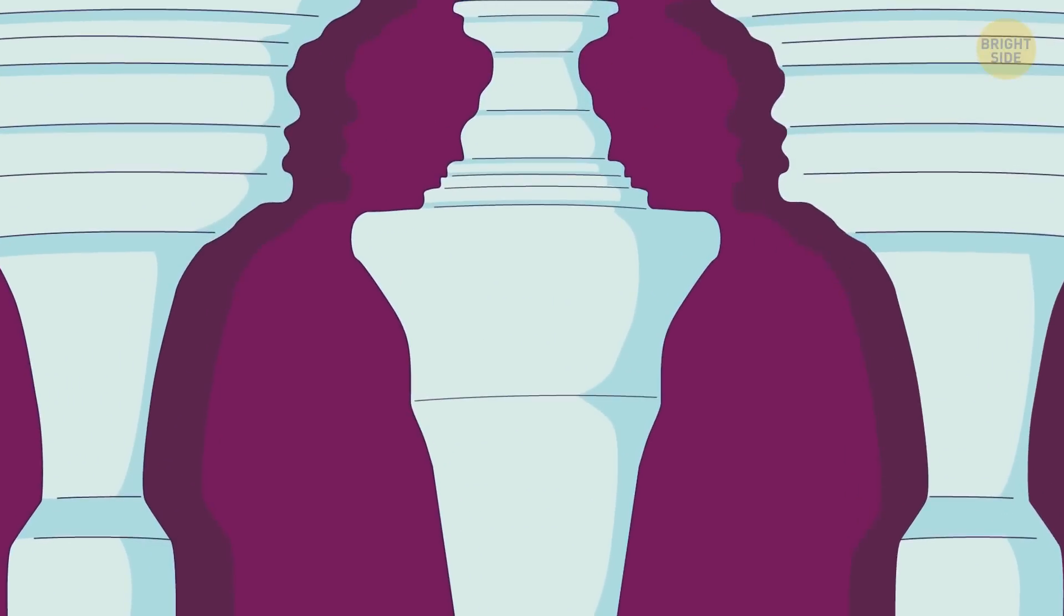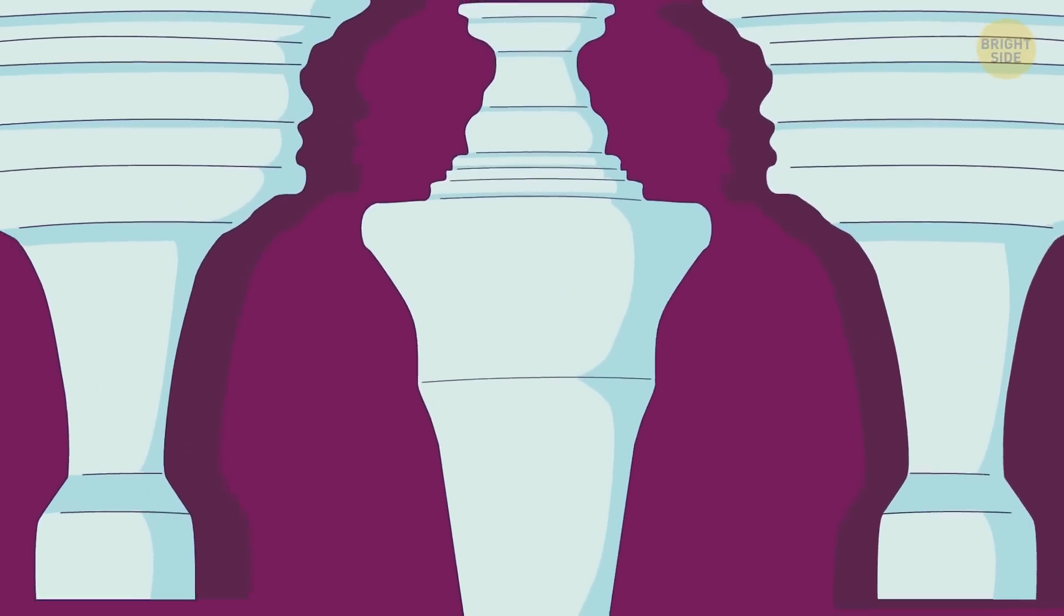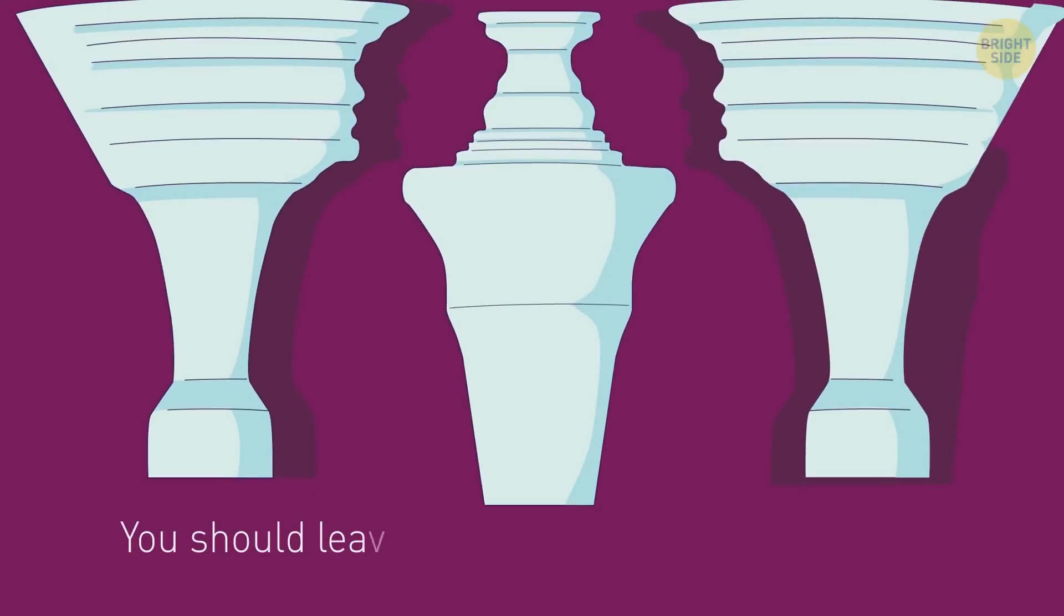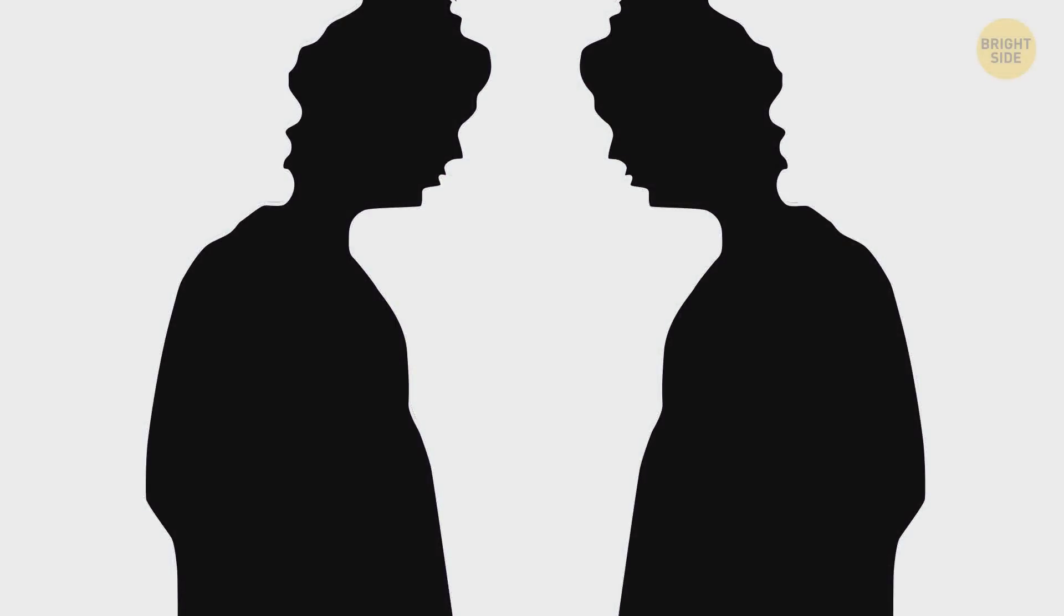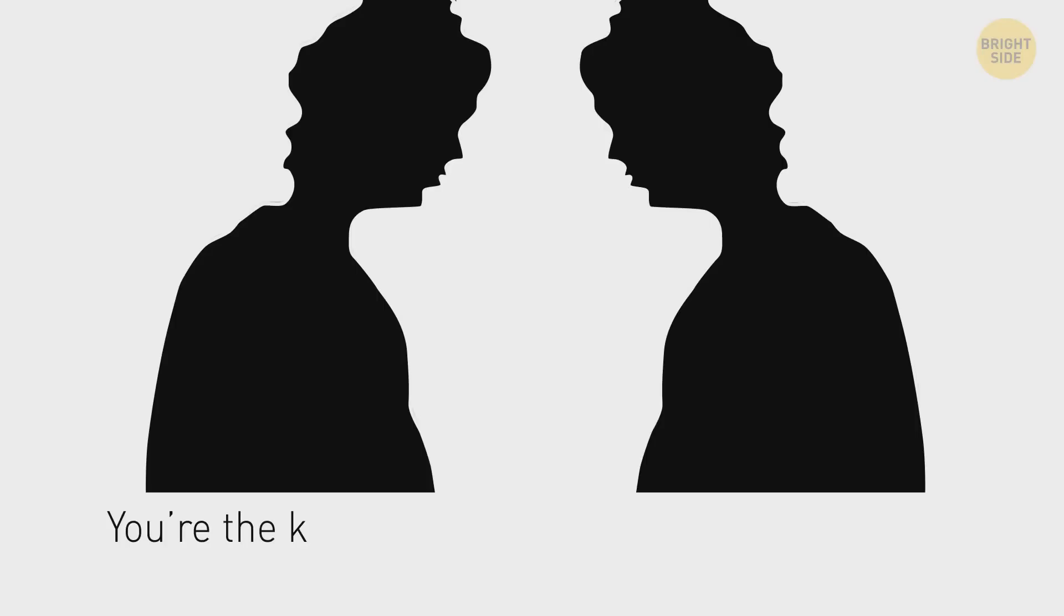The white pillars in the picture mean you like comfort and safety. But you should leave the comfort zone to gain more experience and achieve something new. But if the first thing you see is the silhouettes of two men, then you're the kind of person who doesn't sit in place and is ready to move constantly.